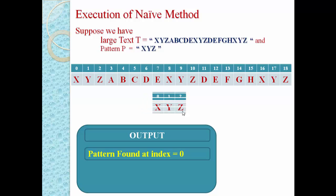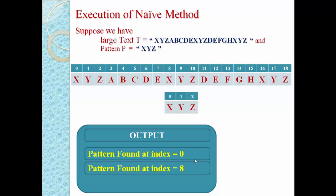When we reach index number 8, we compare X with X — match found. Then Y with Y — match found. And Z with Z — match found. This means the second occurrence is available at index number 8, so pattern found at index number 8. There may be another occurrence, so we shift the pattern by one again.